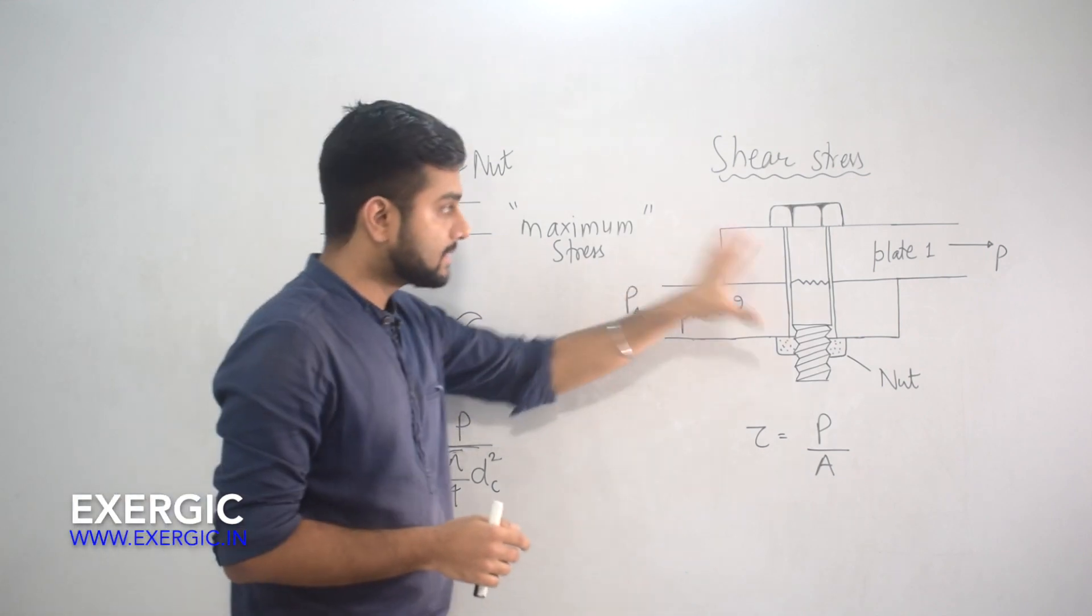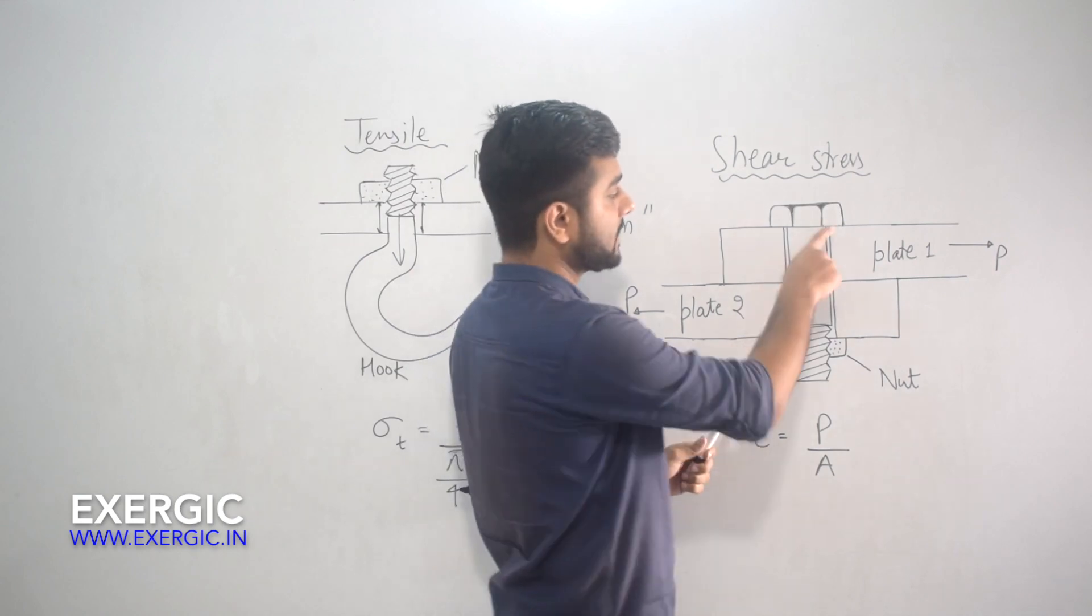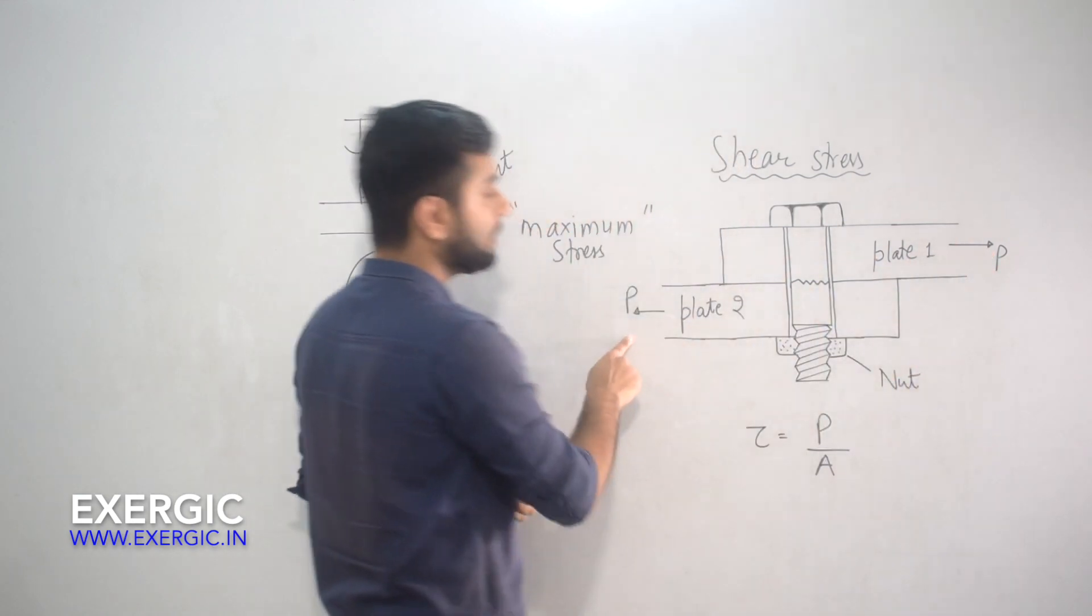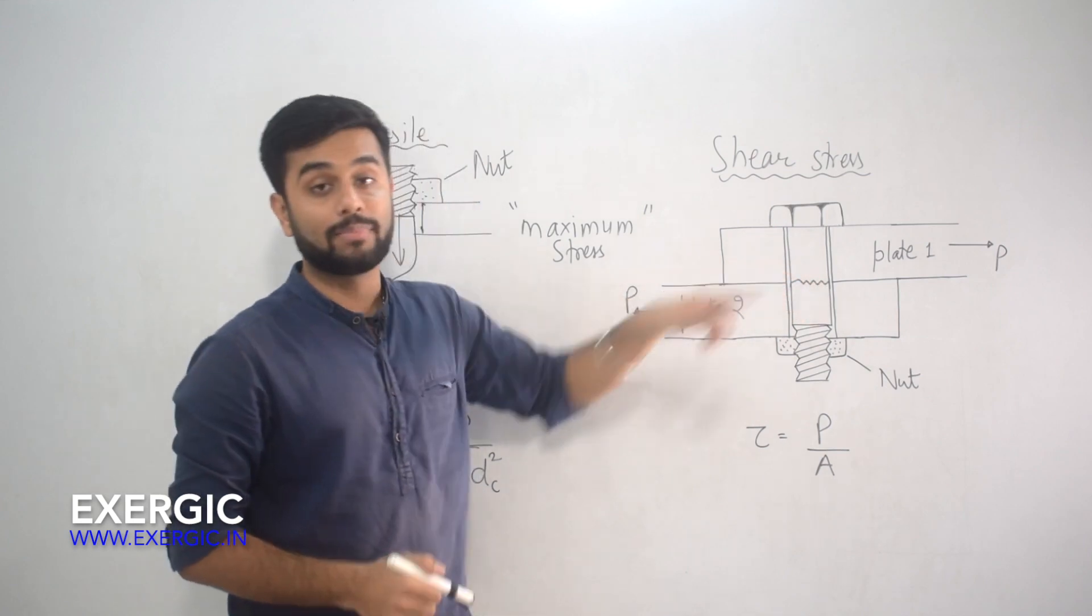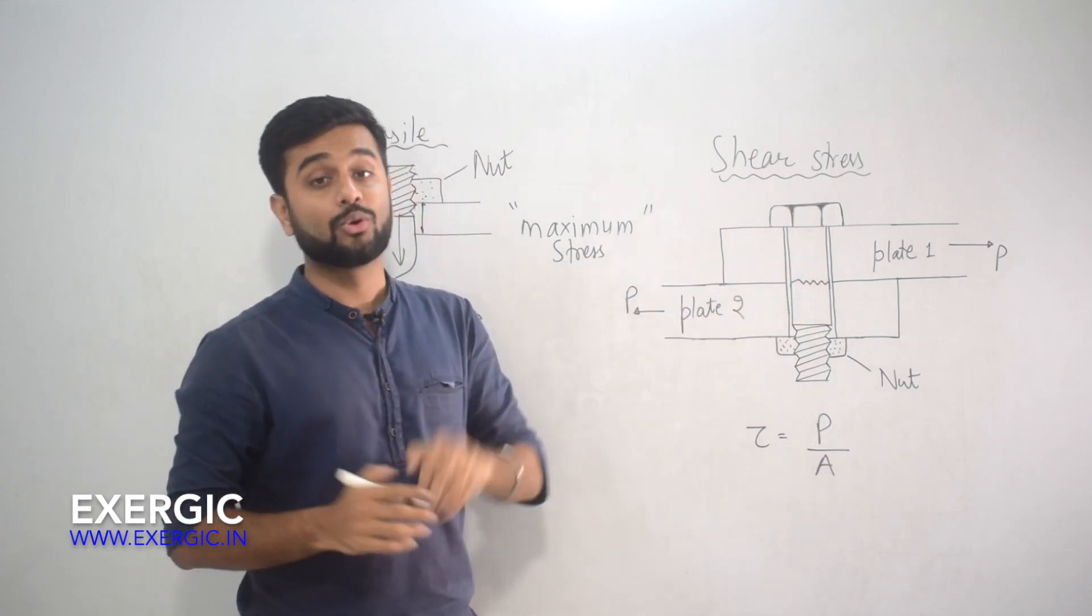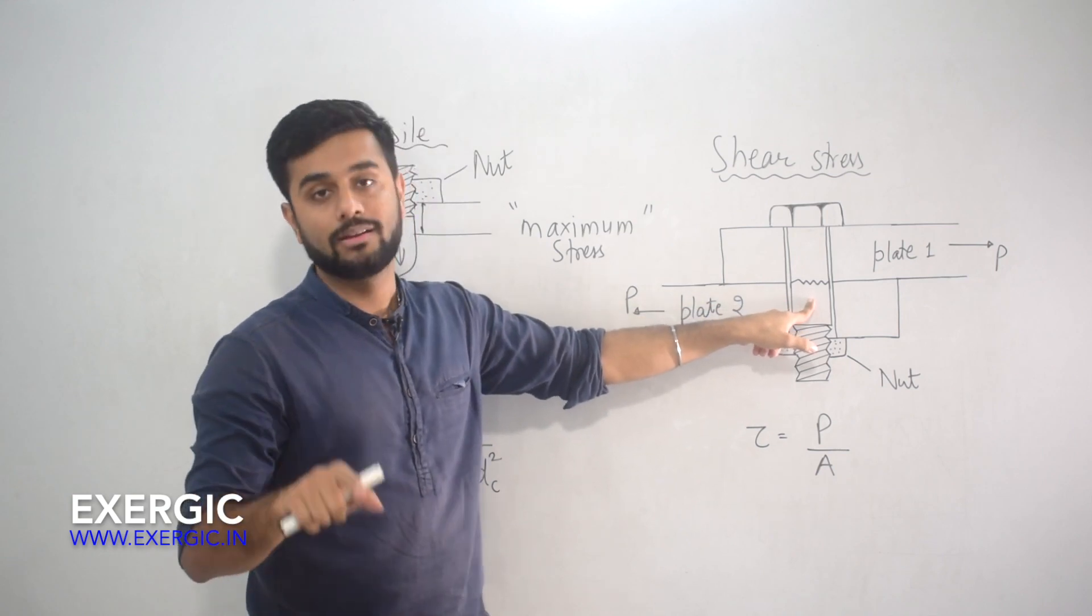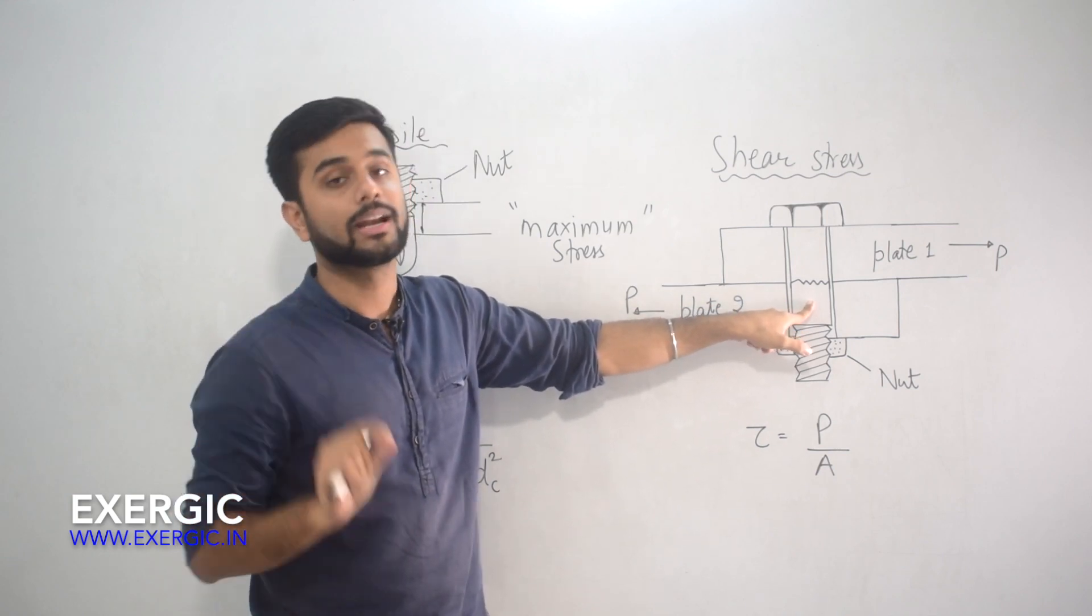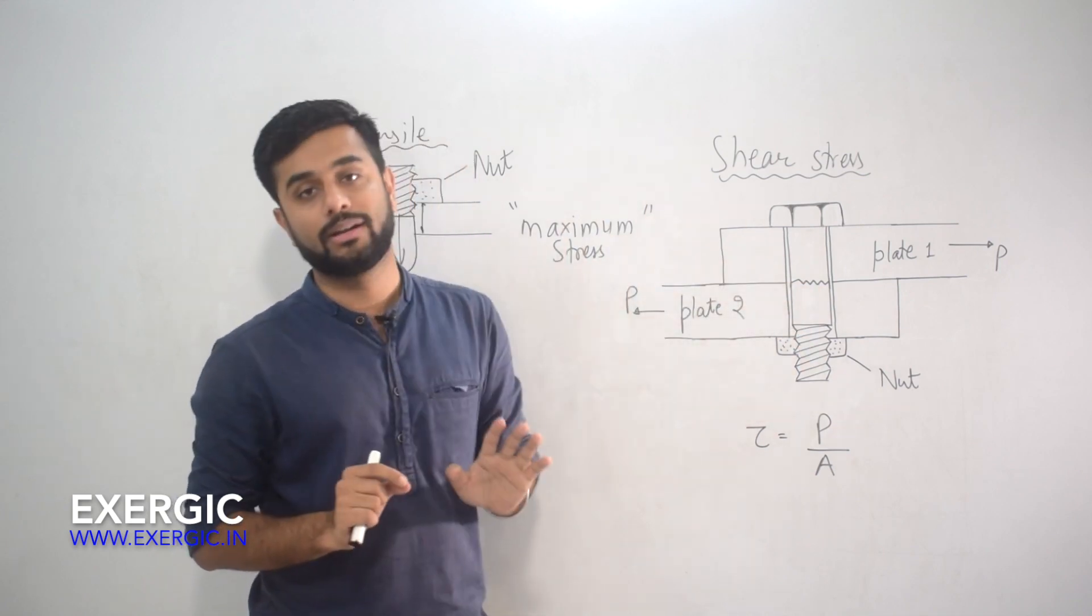Coming to this one, this is where the interesting part begins. If you look at this particular diagram which I have shown, if loads P will be applied like this, you can see that the shear plane or the shear area is going to lie in this part which is unthreaded, in the shank part where it is unthreaded. And the diameter here is not the core diameter but it is the nominal diameter.